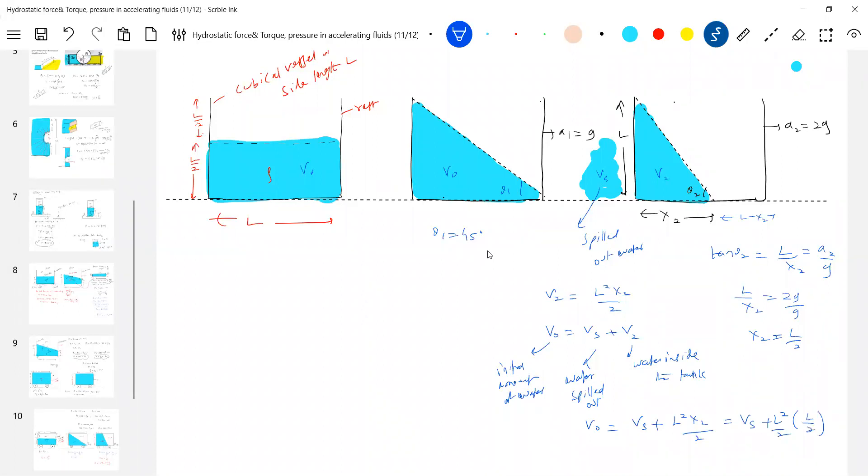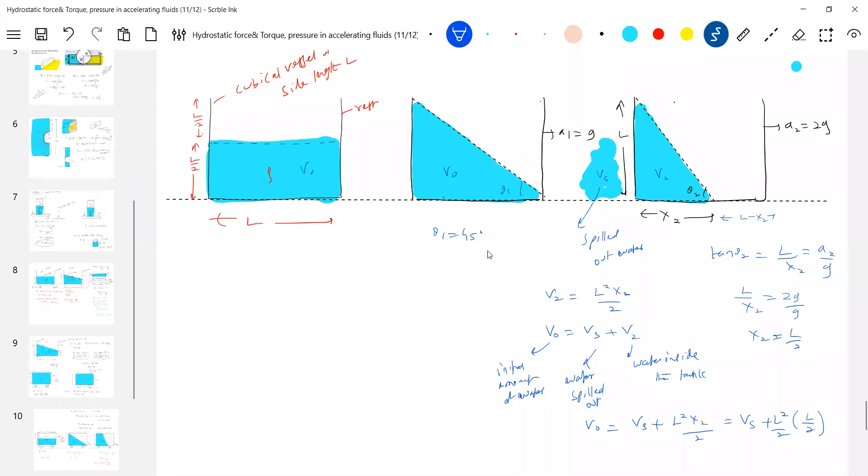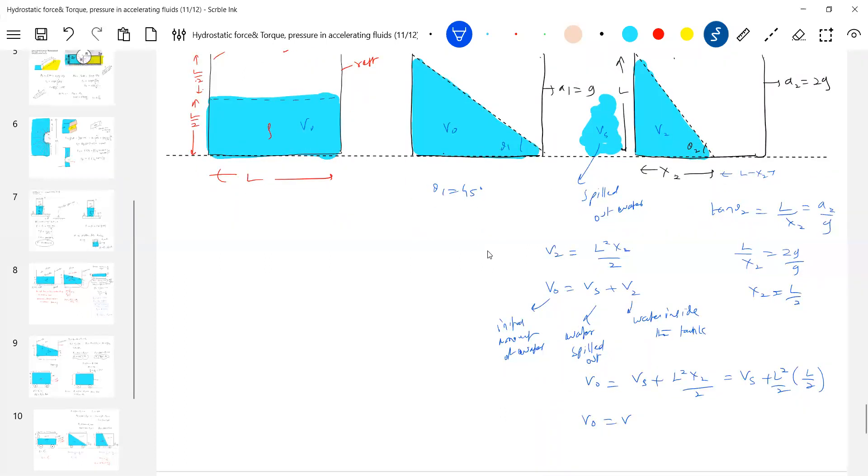l by 2. Only this much it will come. Anybody value of this? v naught is l cube by 2. l cube by 4. So how much spilled out volume should be? l cube by 4.